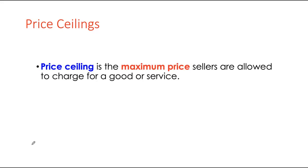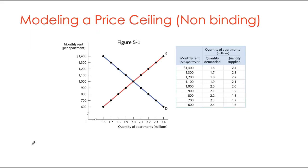Price controls are of two types: price ceilings or price floors. We'll start with price ceilings. A price ceiling is a maximum price — the maximum price that sellers are allowed to charge for a good or service. Sellers can charge any price at that level or below it, but cannot charge above it. That's why it's called a price ceiling: once you hit the ceiling, price cannot go above that.